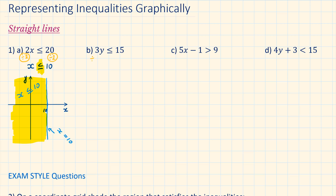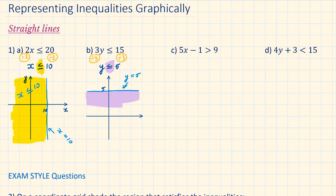Part B: divide both sides by 3. We have y is less than or equal to 5. First, we draw the line y equals 5. Again, we have a solid line because the 5 is also included. The region shaded in purple represents all the possible values of y, which are less than or equal to 5.